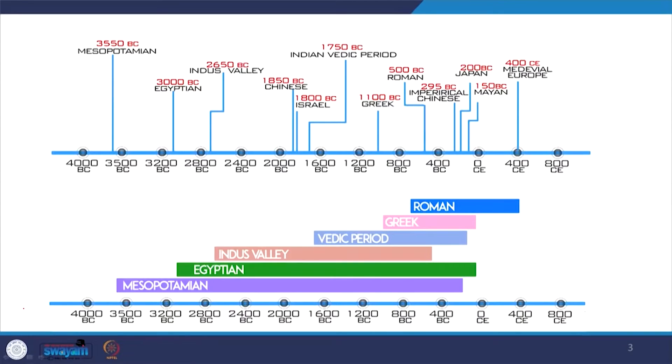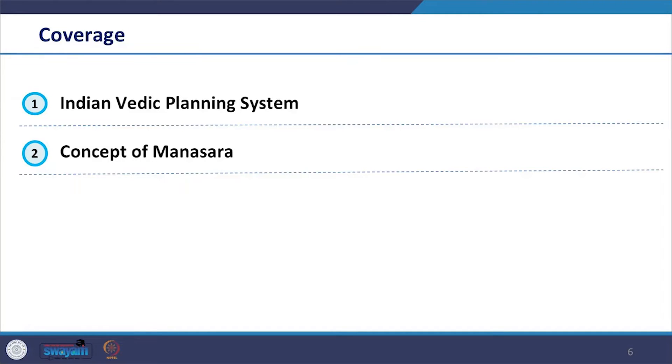Welcome to the course Introduction to Urban Planning. In this session today we will continue with our efforts to contextualize our cities. In the previous class we reviewed and covered Mesopotamian, Egyptian and Indus valley civilization, and today we shall review the Vedic period. The coverage of this lecture will include the Vedic period. We see that the civilization had huge influence on cities of today, and many innovations of that time we see even today in our cities.